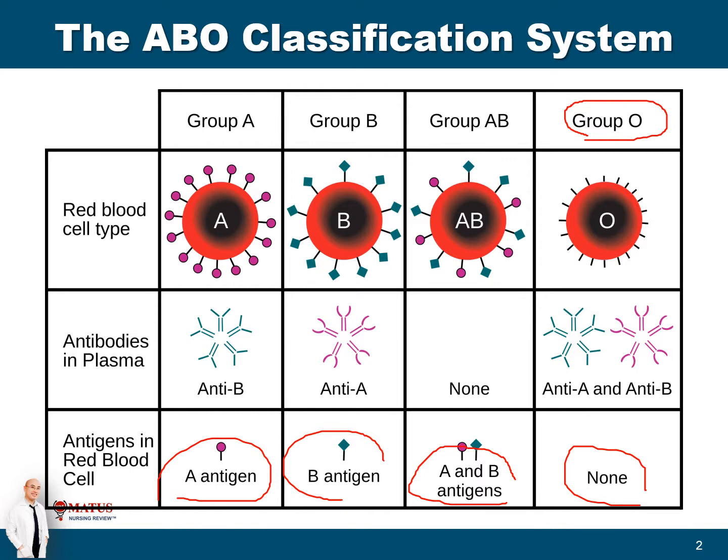However, for type O blood, the antibodies would be anti-A and anti-B, which means you cannot give type A or type B blood to a type O patient because he has antibodies against those. Type AB has no antibodies, and that's why you can give any blood to a patient with AB antigens.